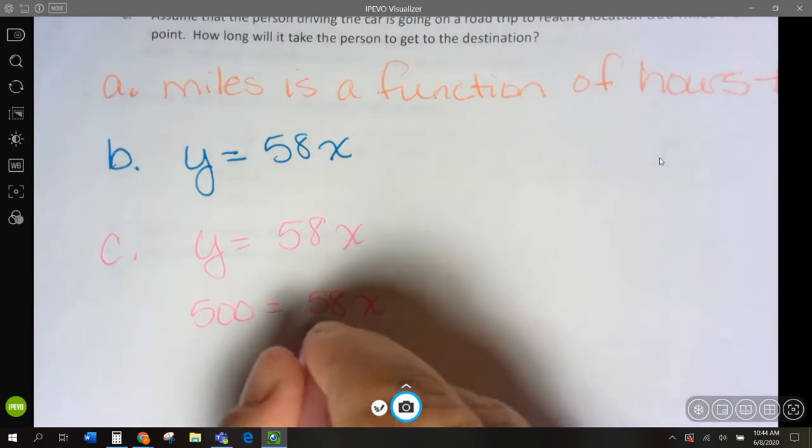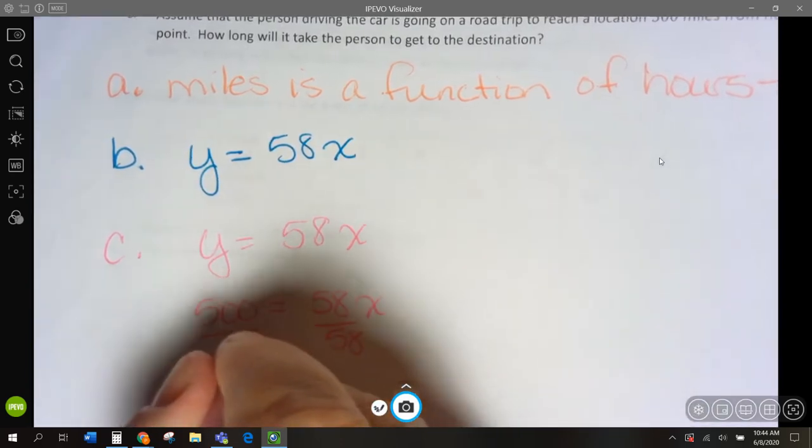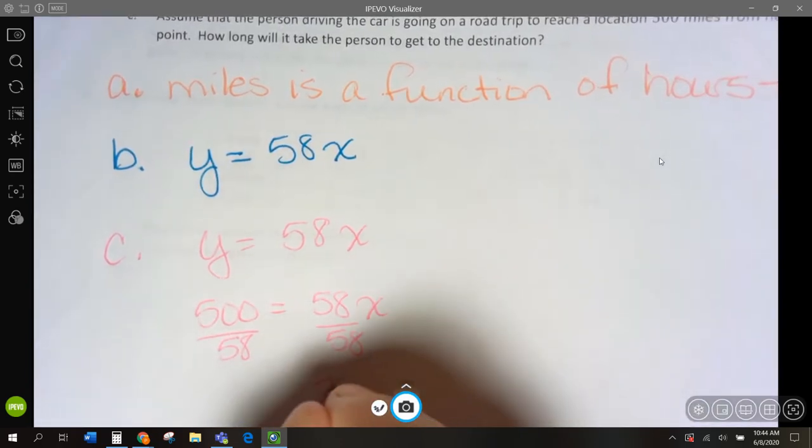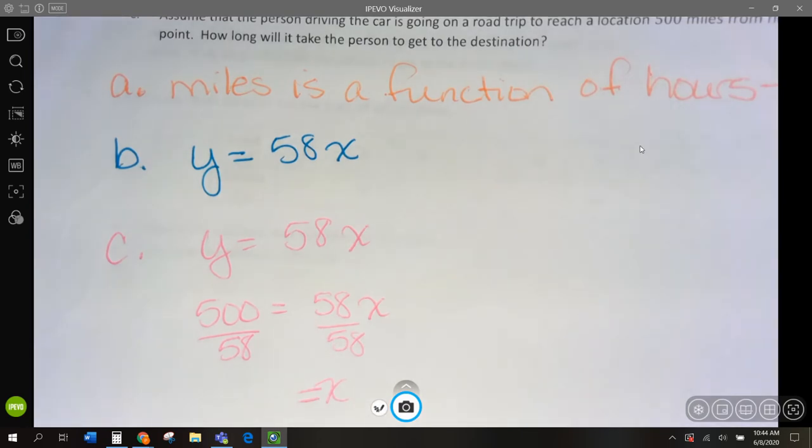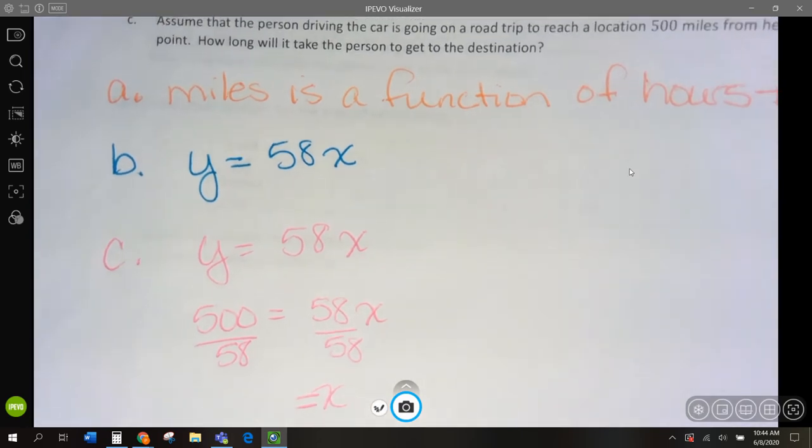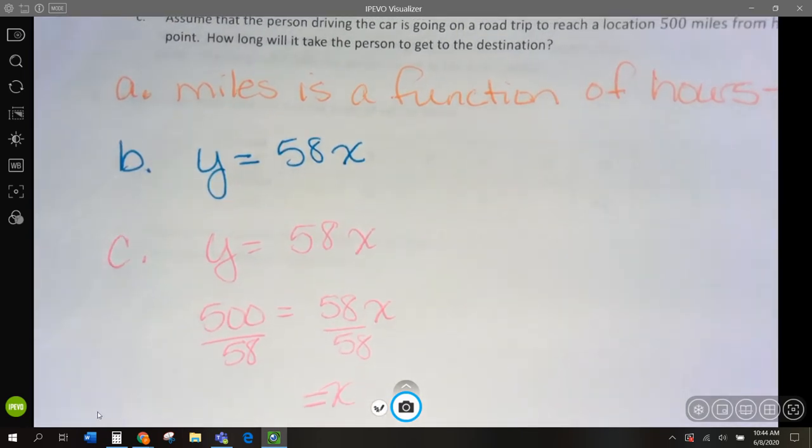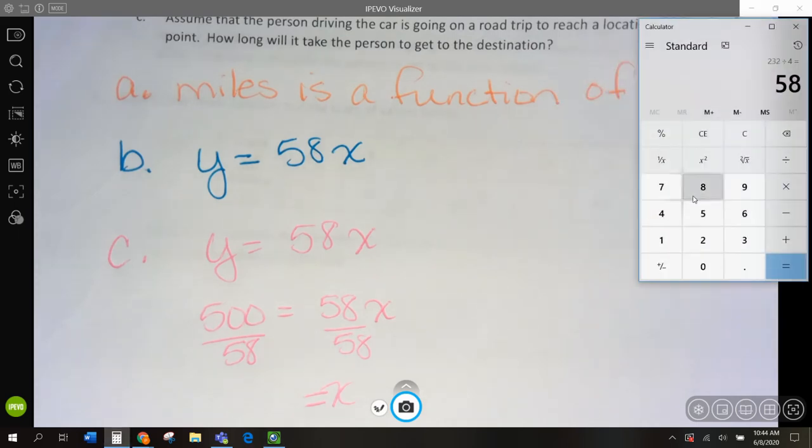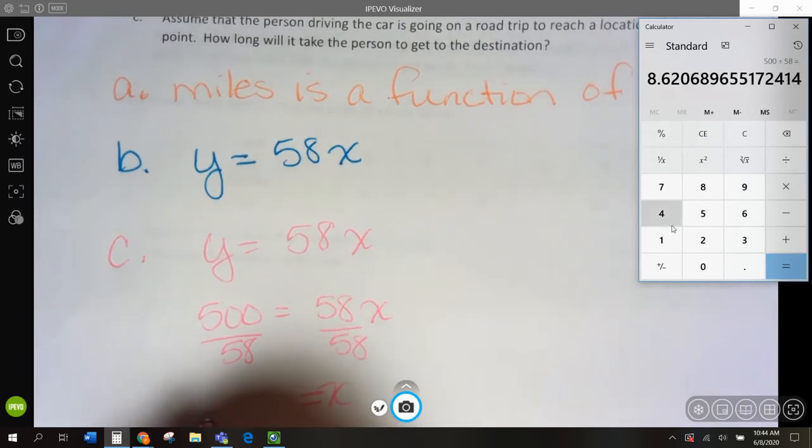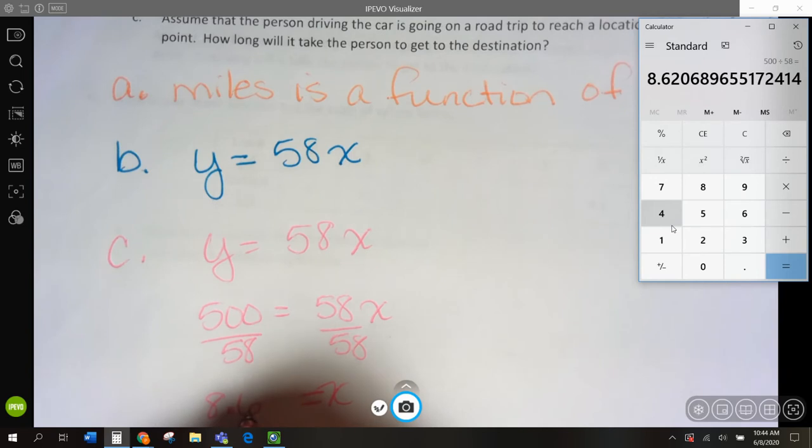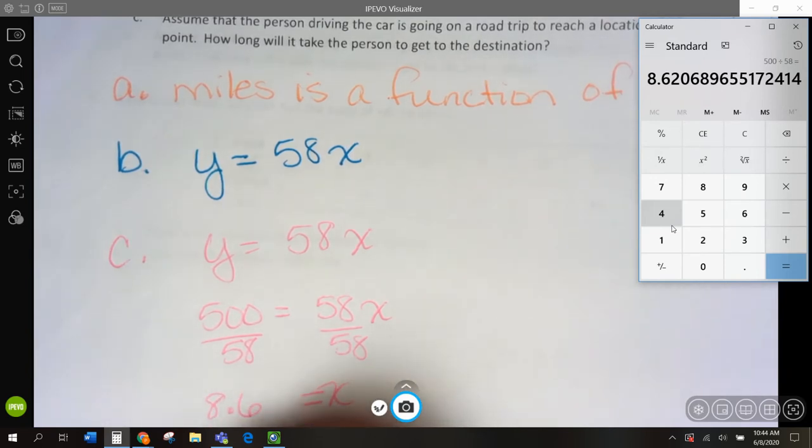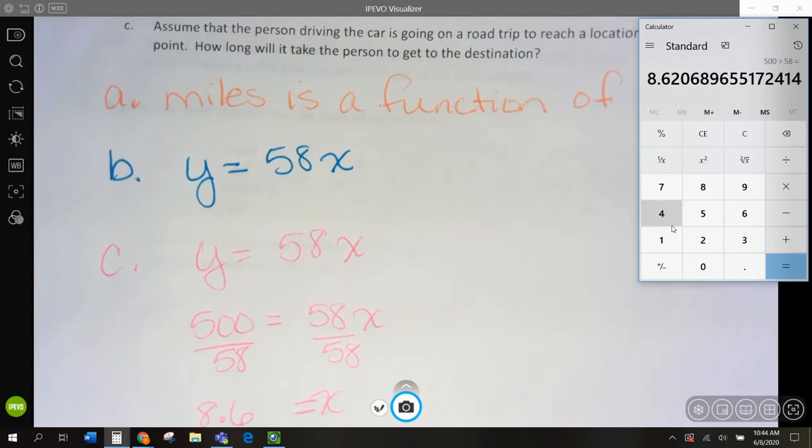How many hours do you have to drive 58 miles an hour to get 500 miles? To solve for x, we're going to divide by 58. And x is going to equal, let's do this. 8.6, or 8.6 hours. It's 0.6 hours.